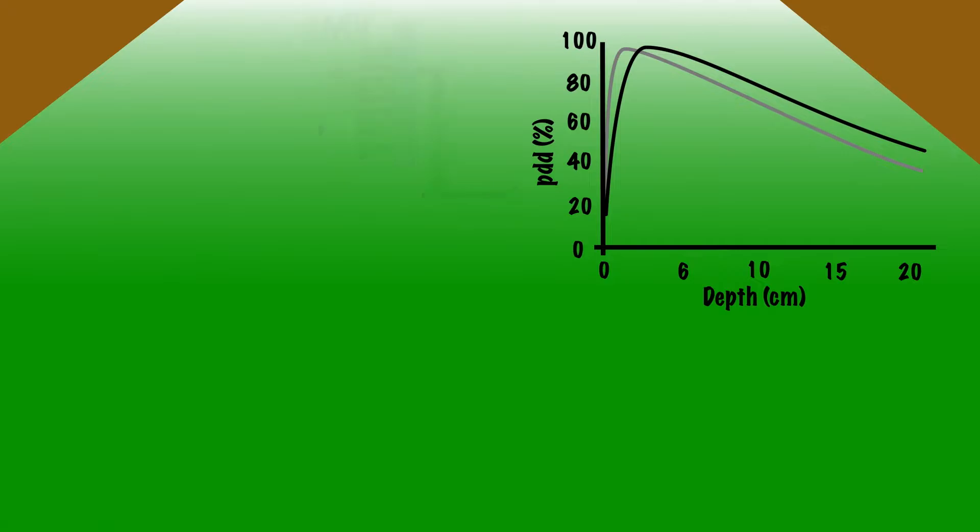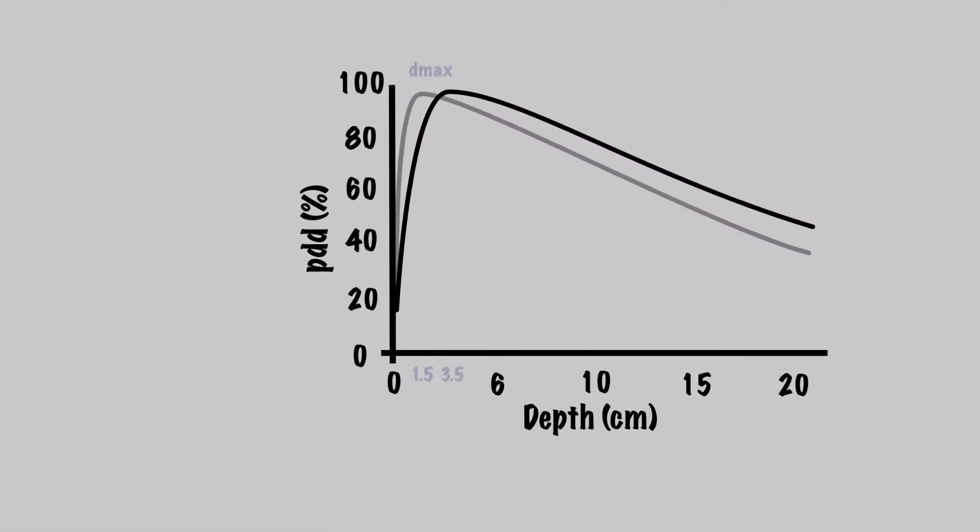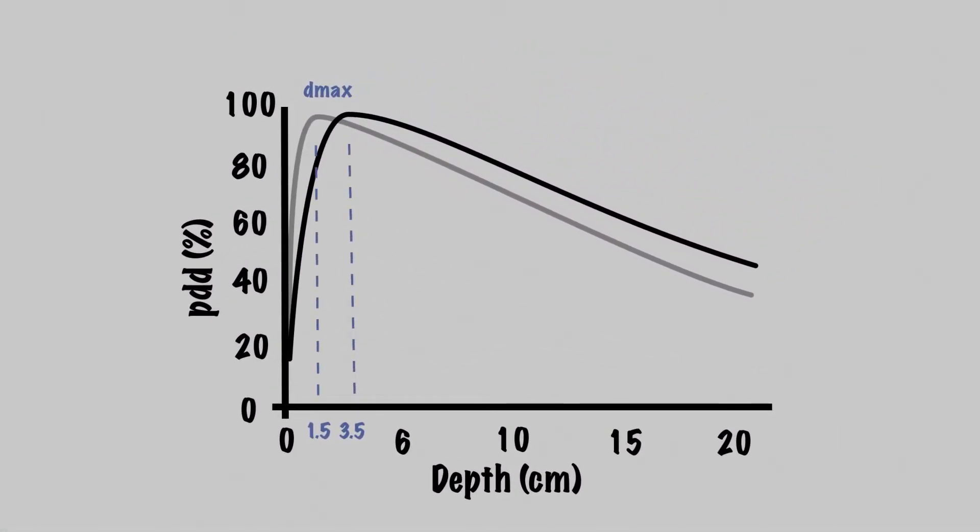But what does energy do to our monitor unit calculation? Because the lower energy photons are stopped easier, their D-max is shallower, and you need more monitor units to make sure there are adequate photons at play to deliver ionization, or dose, where you need it.